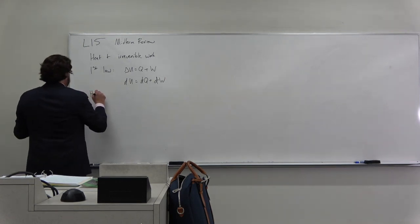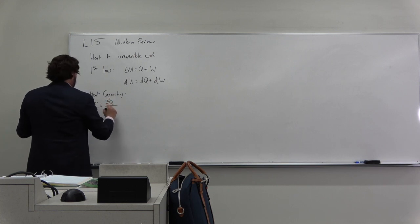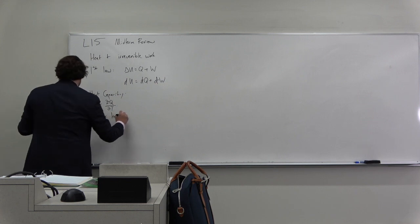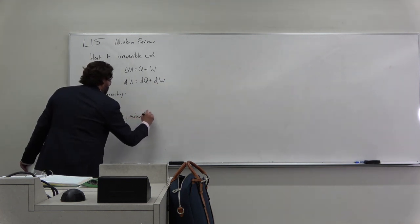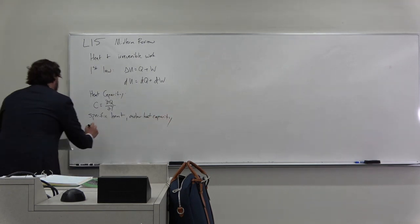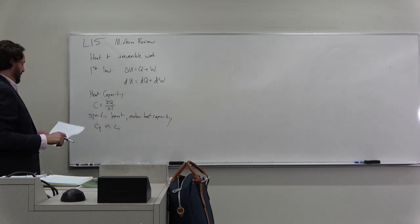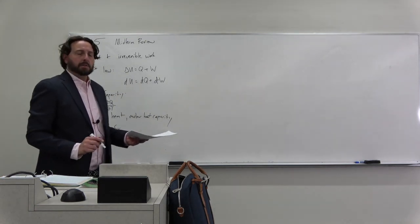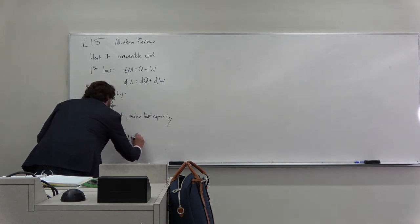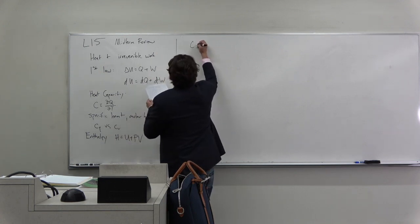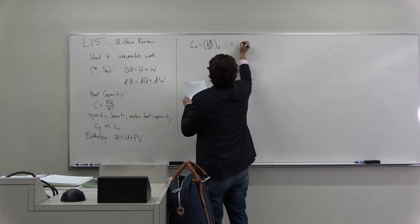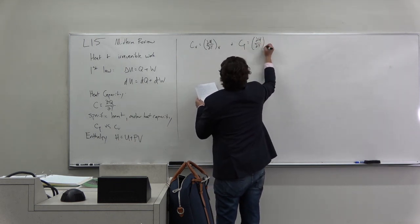We talked about heat capacity, which was partial q partial t. We talked about specific heat and molar heat capacity. We talked about cp versus cv for materials - when would you measure one versus another. We talked about enthalpy: h equals u plus pv. We defined the constant volume heat capacity cv as partial u partial t constant v, and the constant pressure one as partial h partial t constant p.